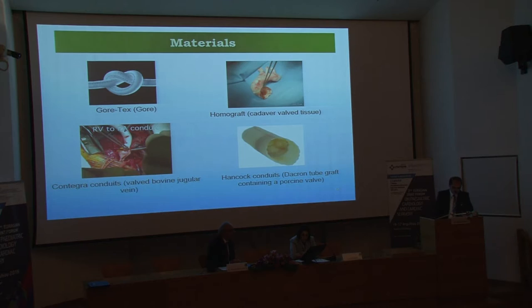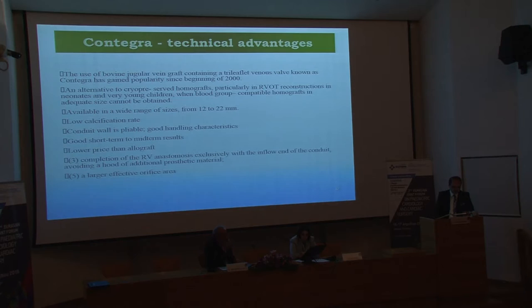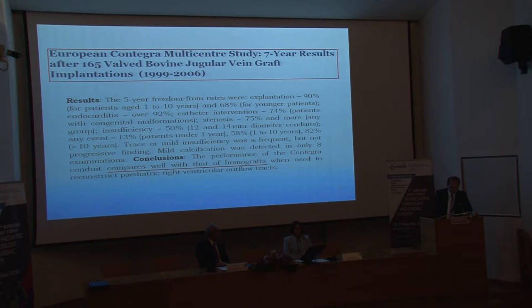The use of bovine jugular vein grafts containing a leaflet venous valve has gained popularity since the beginning of 2000. It is available in a wide range of sizes, has a larger effective orifice area, low calcification rate, good handling characteristics, and a lower price than allografts. Good short-term and mid-term results have been reported in favor of Contegra. The seven-year European Contegra multicenter study concluded that the performance of Contegra conduits compares well with homografts when used to reconstruct pediatric right ventricular outflow tract.